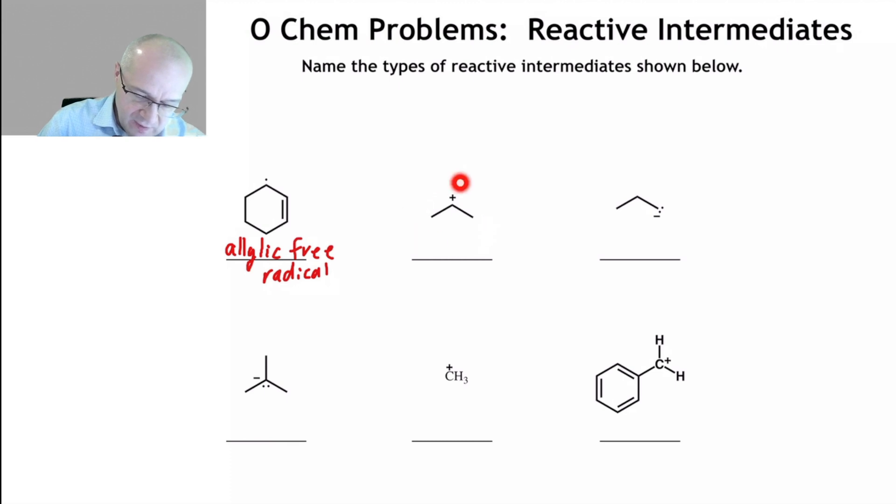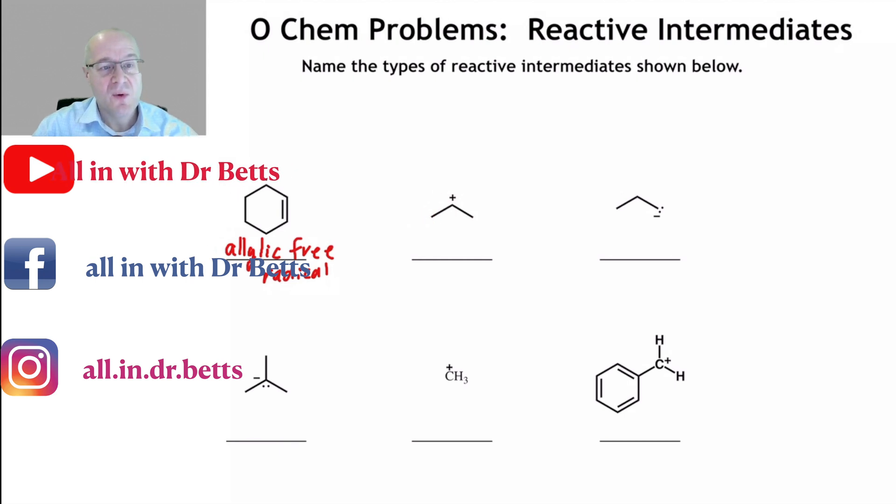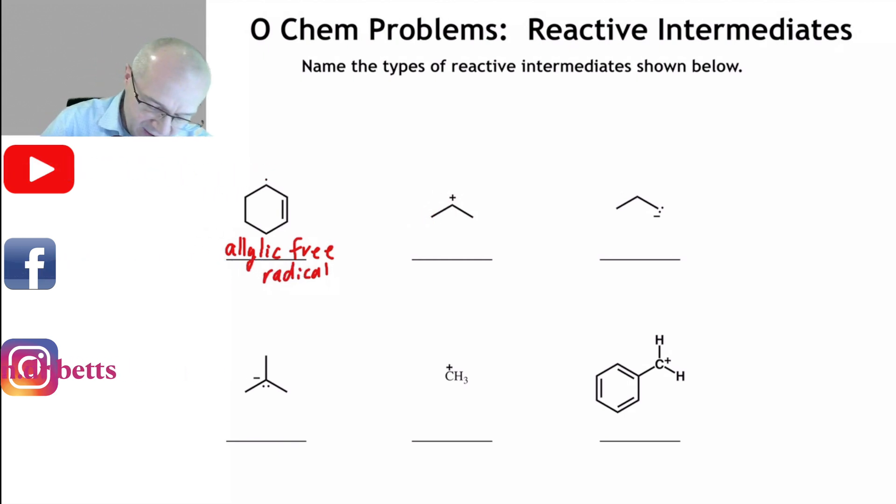Here we go. Here we have a carbocation. More specifically, it's a secondary carbocation. You have your central carbon with a plus charge, and there's two alkyl groups flanking it. That's a secondary or second degree carbocation.